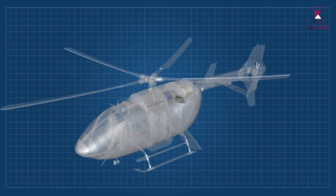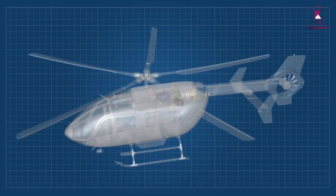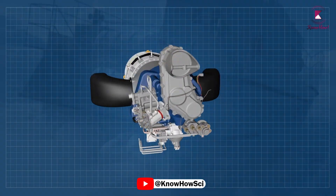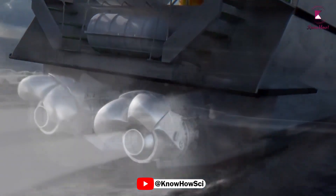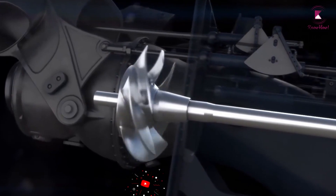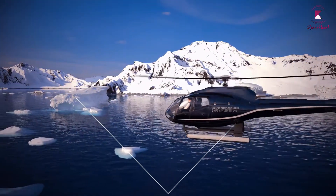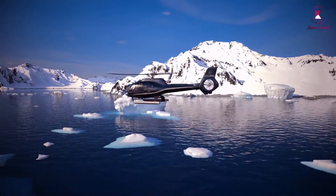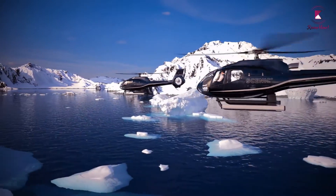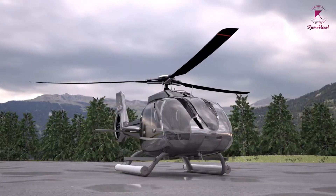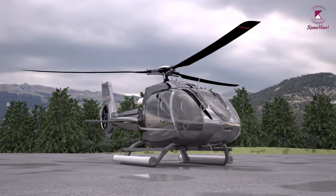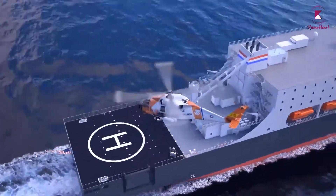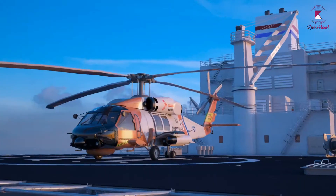A turboshaft engine acts as the powerhouse of modern helicopters. They are also used for power generation and marine propulsion. Turboshaft engines are primarily used on helicopters. The biggest difference between turboshafts and turbojets is that turboshaft engines use the majority of their power to turn a turbine, rather than produce thrust out the back of the engine.